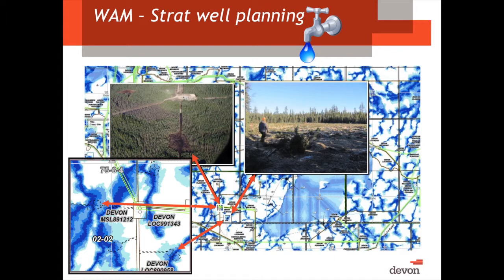With our SAG-D operations, we do what are called stratigraphy wells. We're determining where the bitumen layer is, what the thickness is, and what some of the quality may be. That requires us to make small, approximately half-hectare well sites. It takes about three days to set up a rig, drill, and leave. These are very temporary, frozen ground condition only type sites. And the wet area mapping has proven extremely valuable in locating these and reducing the cost of building them.